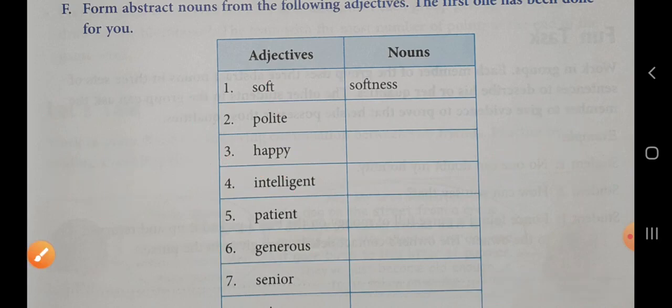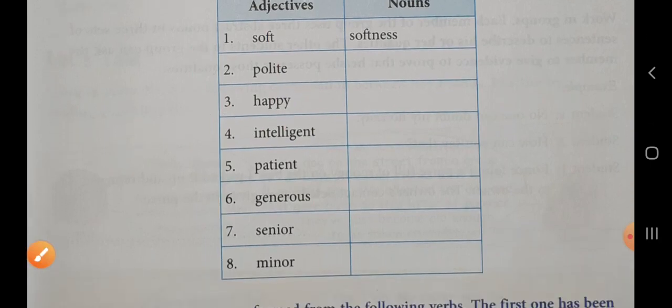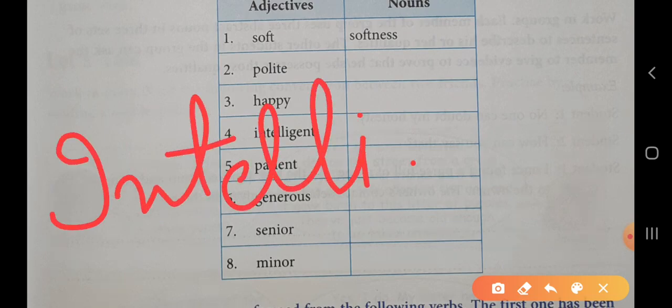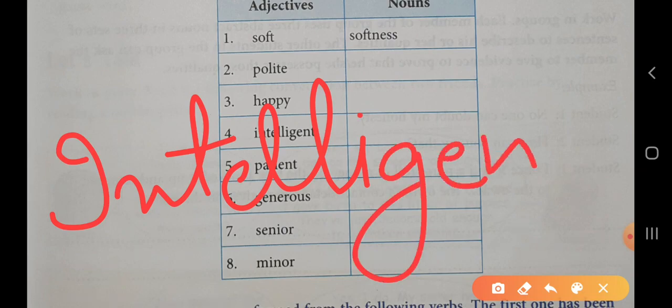The next one: intelligent. For intelligent, the abstract noun will be intelligence. Look at here: intelligent—this is the spelling. Now we will remove T from the last and add C-E. That will be the spelling of intelligence.